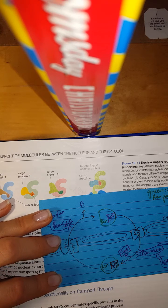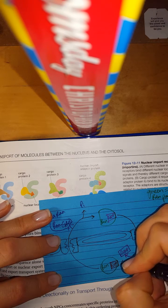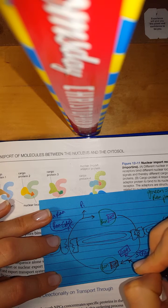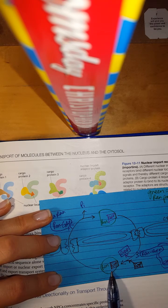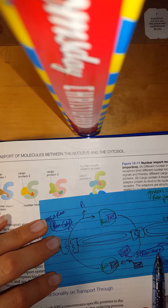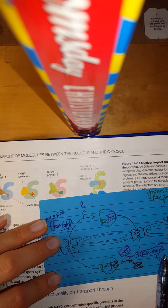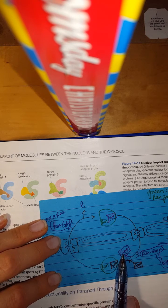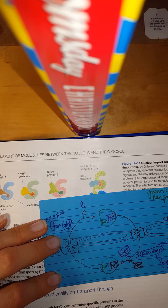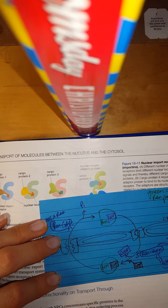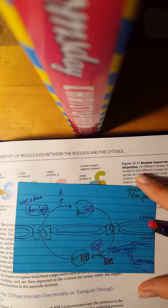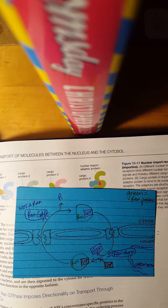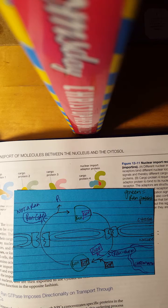I think it's funny how we idealize these things as like boxes and circles and stuff when that's like literally the farthest thing from what they look like. And then they bring in a GTP. And then it gets stuck onto the RAN. So, guanine exchange factor is exchanging the guanine for a different guanine. GDP for GTP. I just turned my flash off. Moving on.